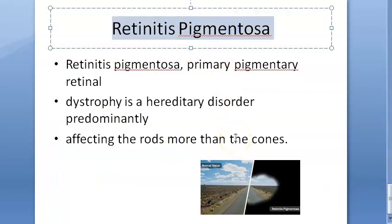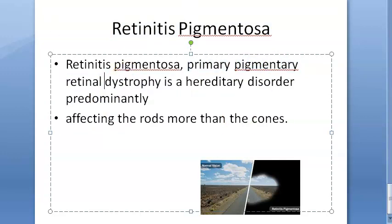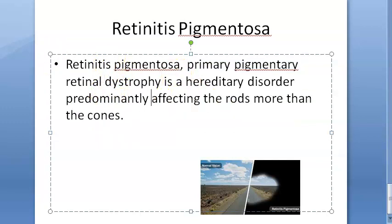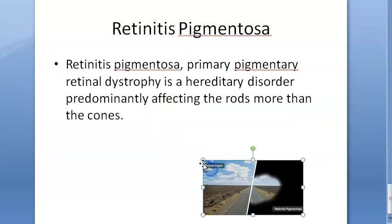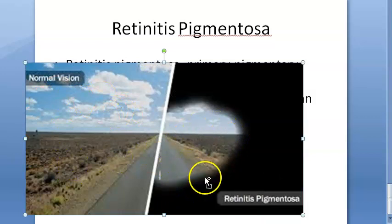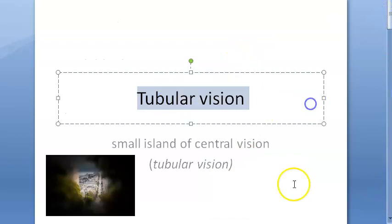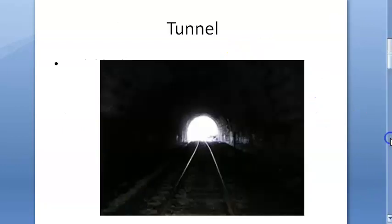Retinitis pigmentosa is primary pigmentary retinal dystrophy. It is a hereditary disorder that affects the rods. This image shows normal vision versus the tubular vision seen in retinitis pigmentosa — that is what you need to know.